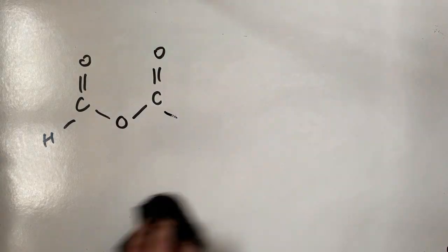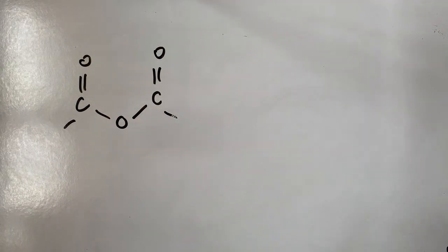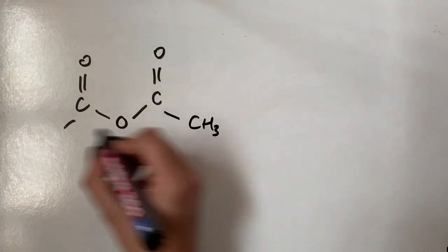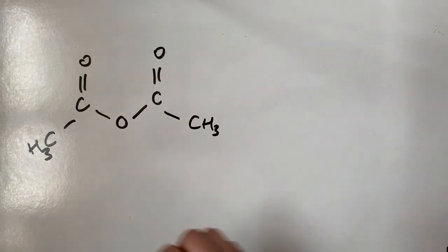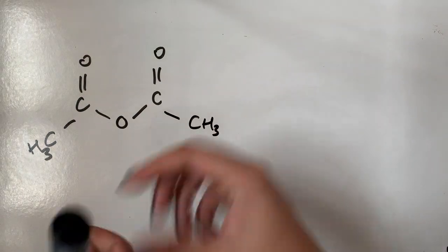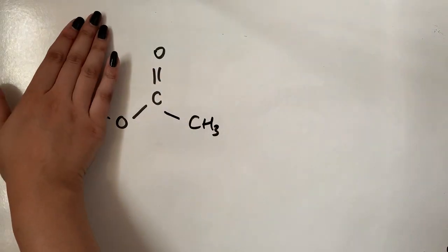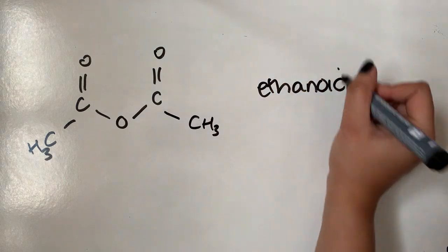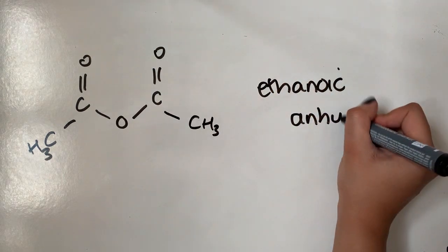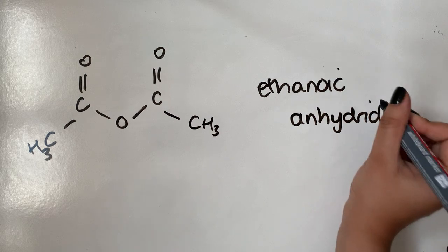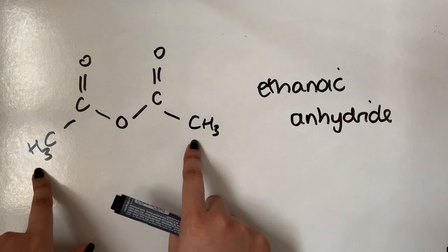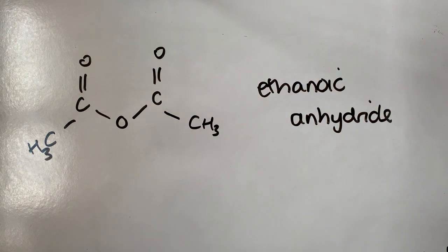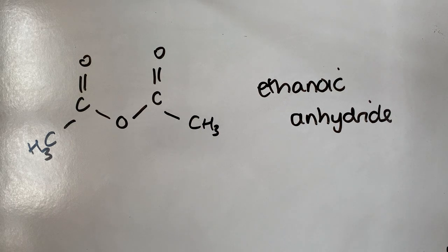The next one is where the R group is a methyl group. As you can see, this was originally made from ethanoic acid, and therefore this one is called ethanoic anhydride. If I keep extending the chain — if this was made from propanoic acid, it would be called propanoic anhydride. The next one would be butanoic anhydride, and so on. So that should be fairly straightforward.